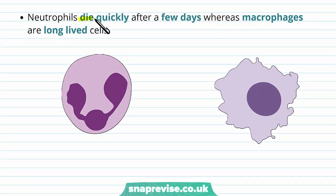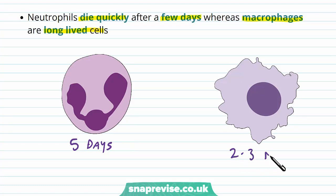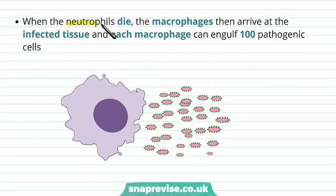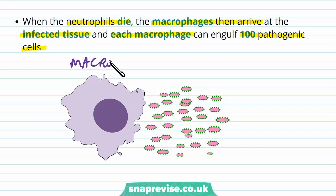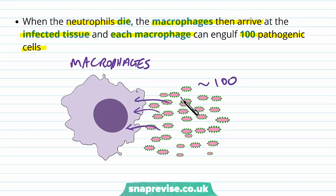The neutrophils don't last very long — they die quickly after a few days, lasting about five days. But macrophages which have come along are very long-lived cells, lasting two or three months. So neutrophils are the short-lived first response. When the neutrophils die, the macrophages then arrive and take over. They arrive at the infected tissue and each macrophage can engulf about 100 pathogenic cells, because they're much larger and have a greater capacity.